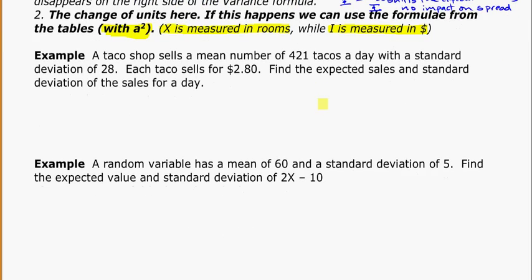So one more example to look at here. A taco shop sells a mean number of 421 tacos a day with a standard deviation of 28. Each taco sells for $2.80. Find the expected sales and the standard deviation of the sales for the day.